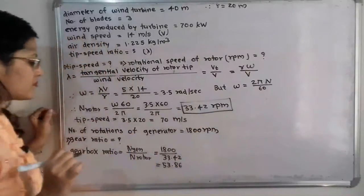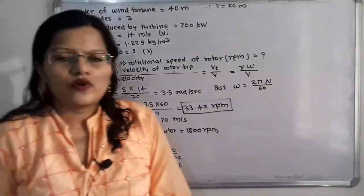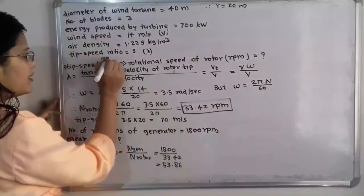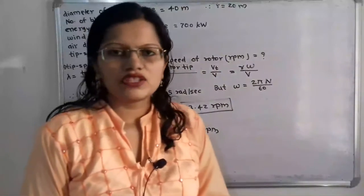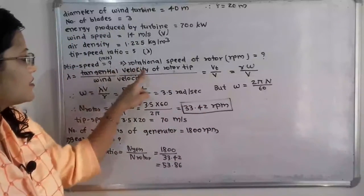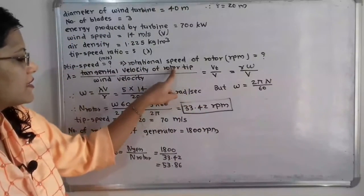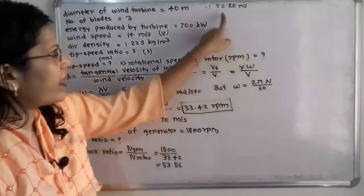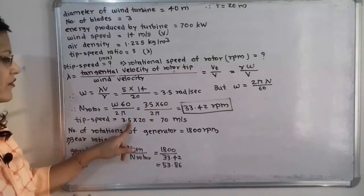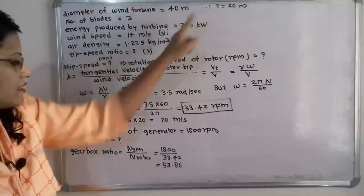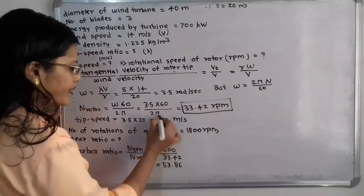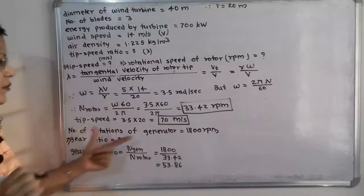Next is the tip speed — the speed in meter per second. We know the relation: tip speed v equals r omega. Here r is given as 20 meters and omega we calculated as 3.5 rad/s. So tip speed equals 3.5 multiplied by 20, which gives 70 meter per second. This is the answer for tip speed.